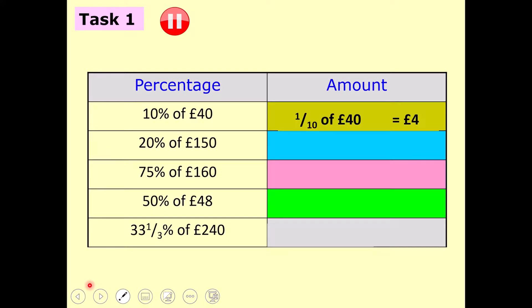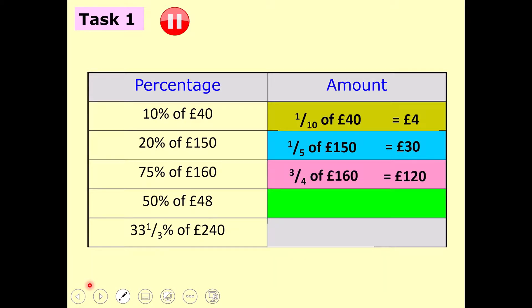Second one: 25% of £150. 25% as a fraction is a quarter, so divide by 4 to get £30. Wait — actually 25% is a quarter, divide 150 by 4... the answer shown here is £30. Third: 75% of £160. 75% is three quarters — divide 160 by 4 to get 40, then multiply by 3 to get £120. Well done if you got that one.